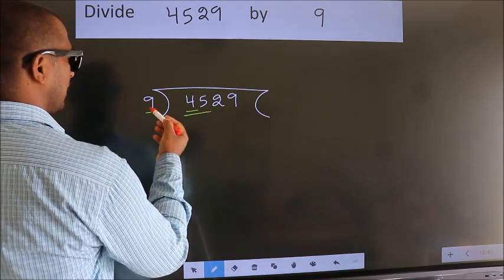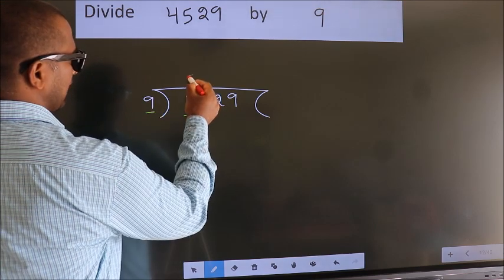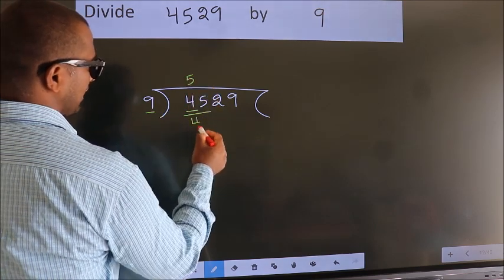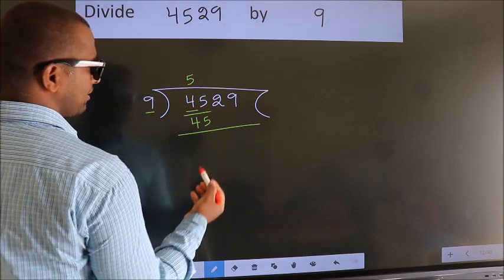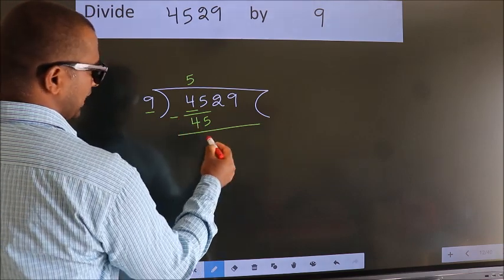When do we get 45? In the 9 table. 9 times 5 is 45. Now we subtract and get 0.